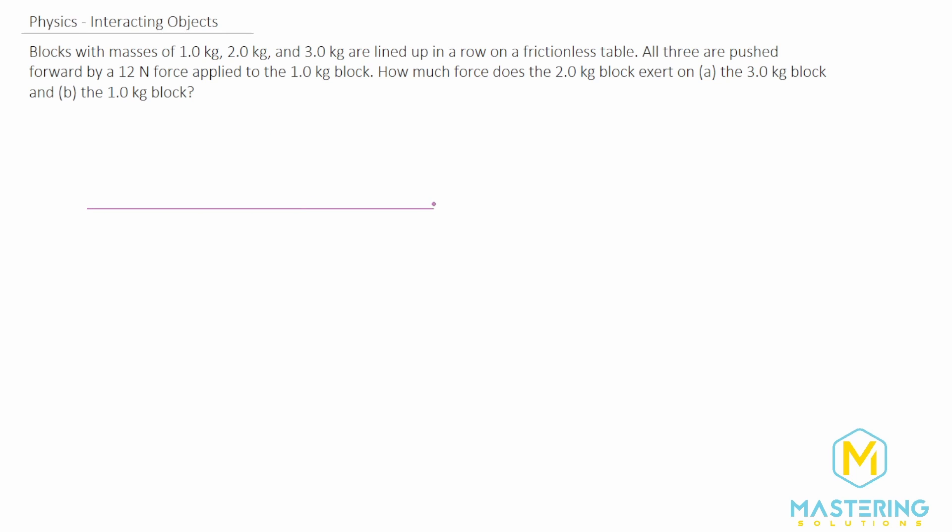So let's draw a picture here. So we have the 1-kilogram block right there, and then we'll say this one a little bit bigger is the 2 and then the 3. So 1-kilogram, 2, and 3. So right here we have a force, and they say that it's 12 newtons applied to block 1, and then we need to figure out for block 2 what the force is pushing back on 1 and then pushing forward on 3.